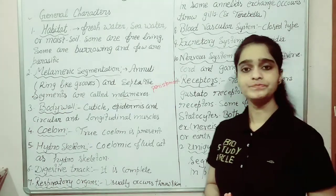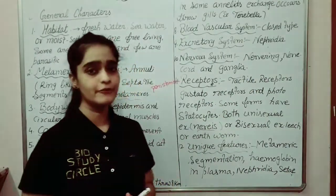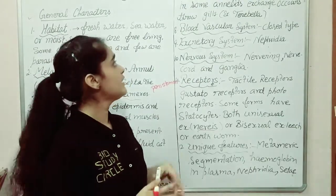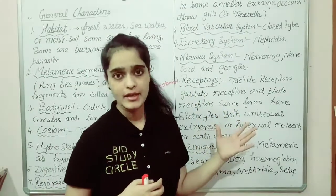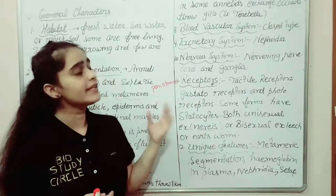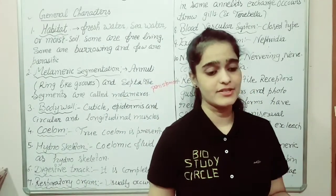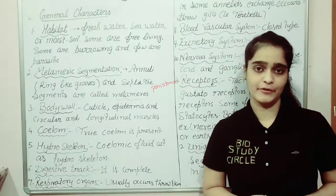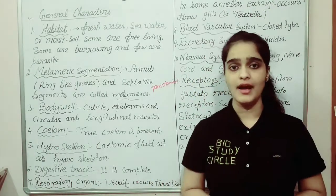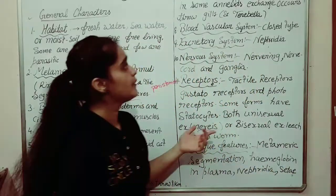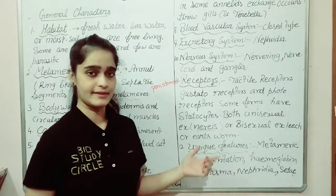Most annelids use their skin for respiration. In some organisms, for example in Terebella, gills are present. Respiration occurring through the skin is called cutaneous respiration, while respiration occurring with the help of gills is known as branchial respiration.